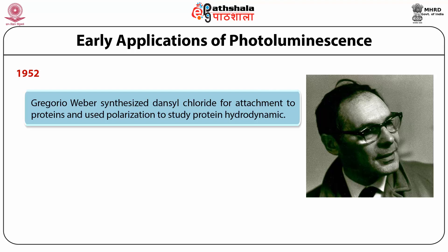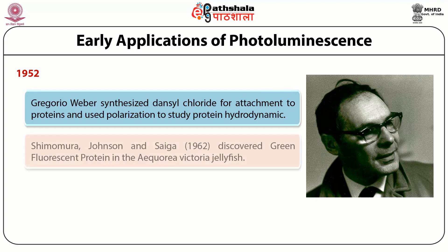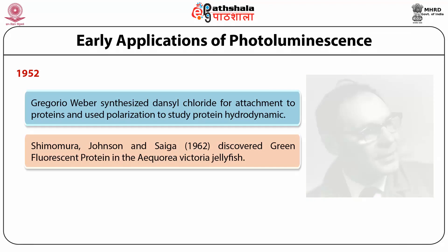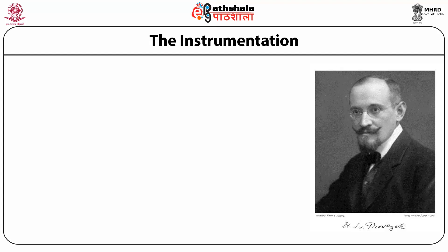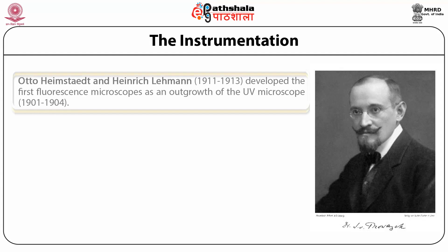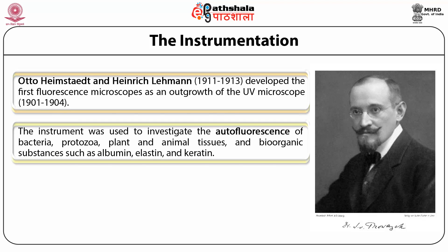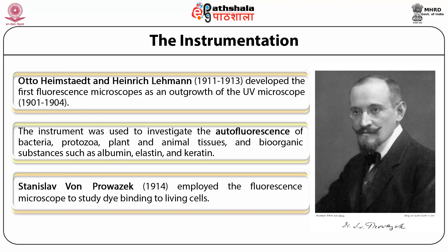These studies initiated the field of quantitative biological fluorescence. Shimomura, Johnson, and Saiga in 1962 discovered green fluorescent protein in Aequorea jellyfish. In 1913, the first fluorescence microscope was developed by Otto Heimstädt and Heinrich Lehmann as an outgrowth of the UV microscope. The instrument was used to investigate the autofluorescence of bacteria, protozoa, plant or animal tissue, and bio-organic substances such as albumin, elastin, and keratin. Przibram in 1914 employed the fluorescence microscope to study dye binding to living cells.